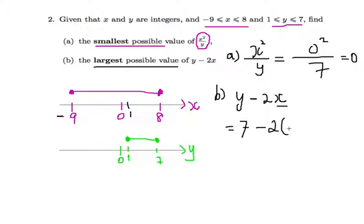So if I put in x as minus 9, I'll get 7 plus 18 which gives me 25. So this is the highest.